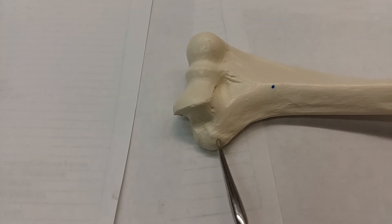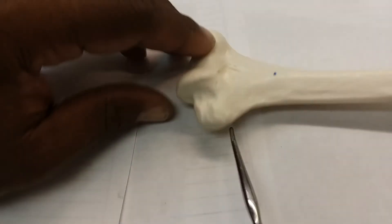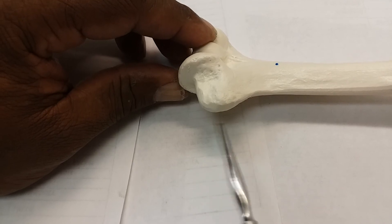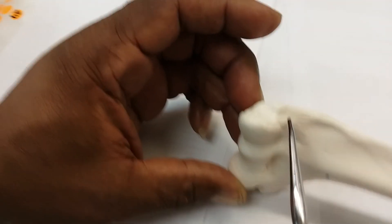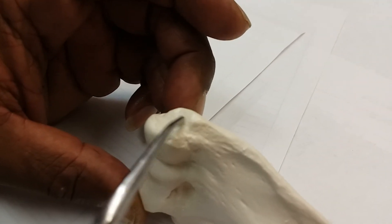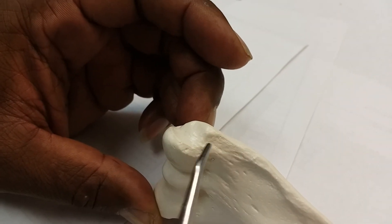Down here, this section right here is the medial epicondyle. Let me lift it up right here. Medial epicondyle. And on the opposite side, this is called the lateral epicondyle. The word epi means above.